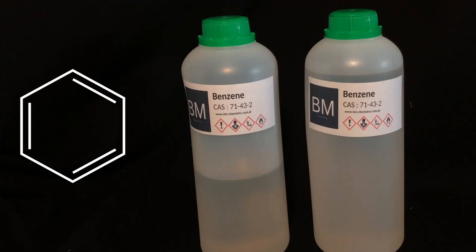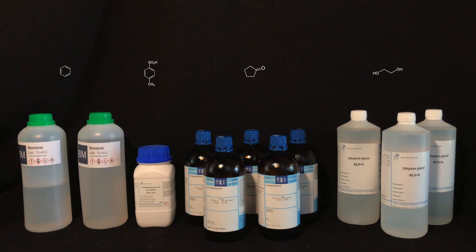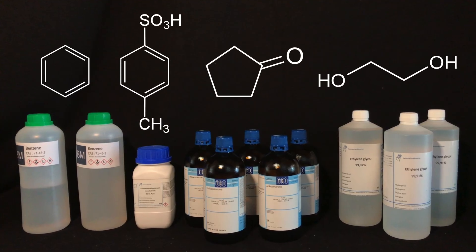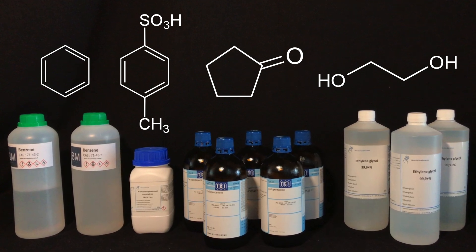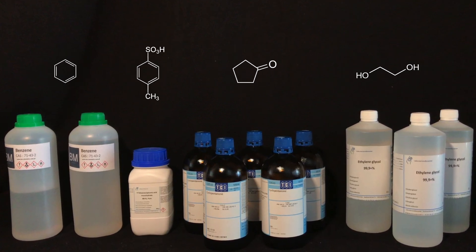You could use toluene, but benzene has a lower boiling point which may increase the yield. And there you go, we're now ready to begin with the first step of making cubane monocarboxylic acid. These are the chemicals with their molecular structure.